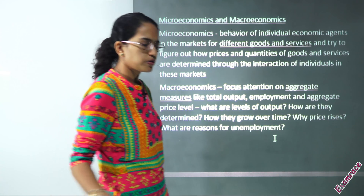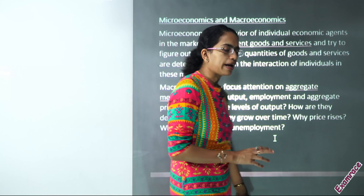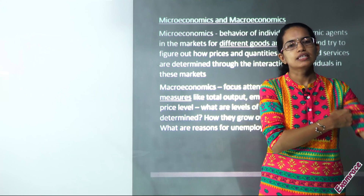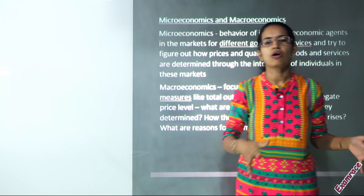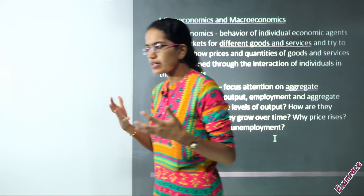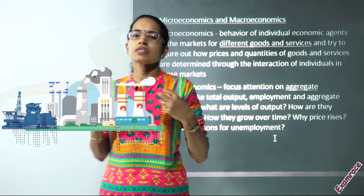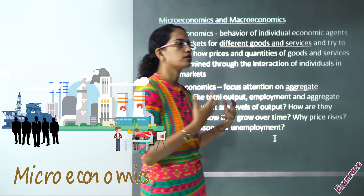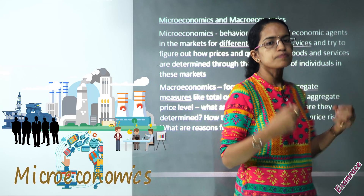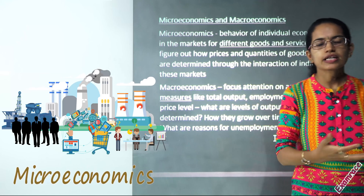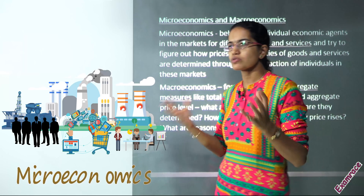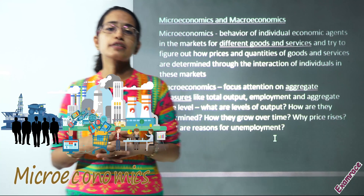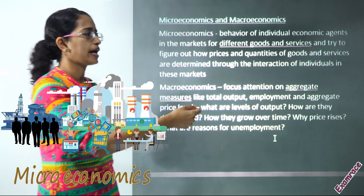Let's talk about the difference between micro and macroeconomics. In simple terms, microeconomics concerns the individual — the decisions being made by an individual. It talks about the goods and the services, the quantity and the prices of individual goods and services in the market, as well as the demand and supply.